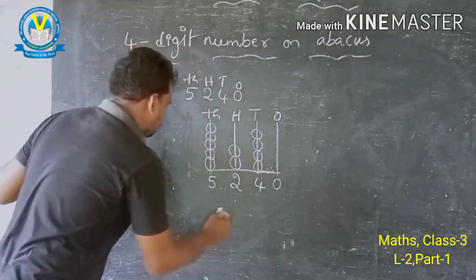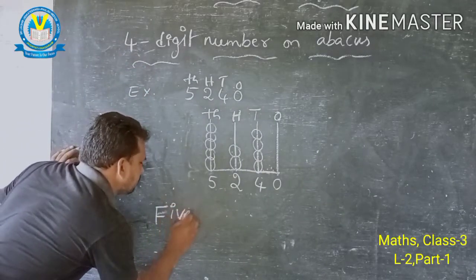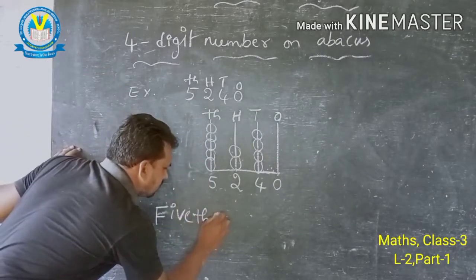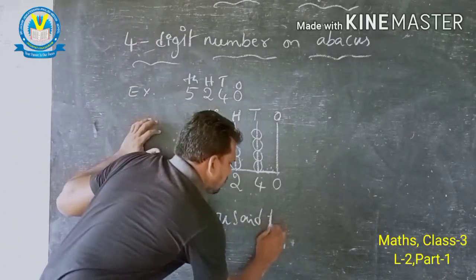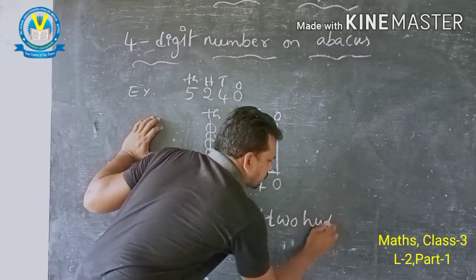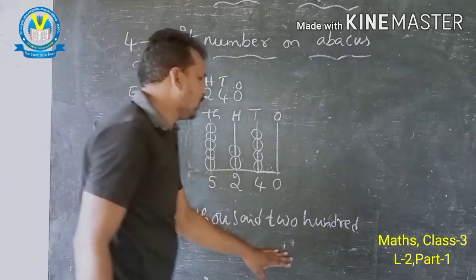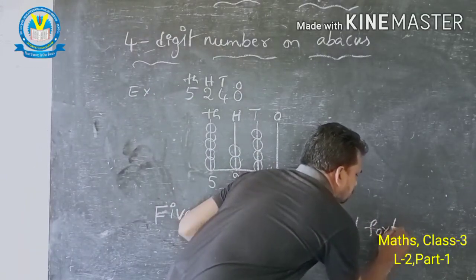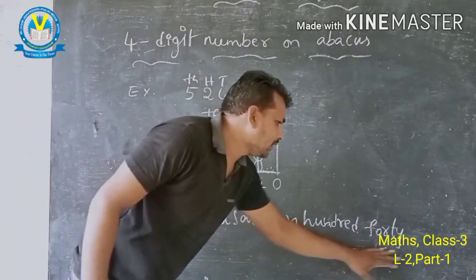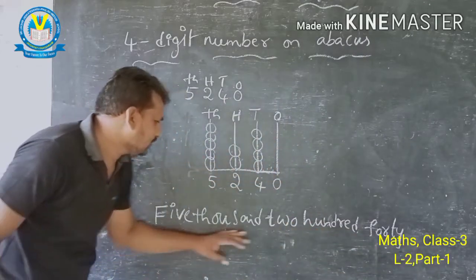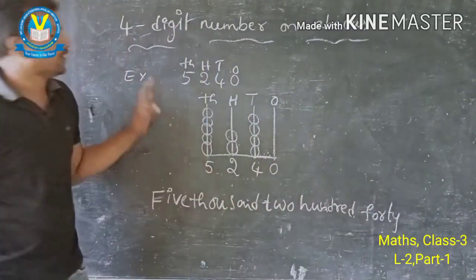So here: 5 thousands, 2 hundreds, 4 tens, 0 ones. Write the number: 5,000 plus 200 plus 40 equals 5,240.